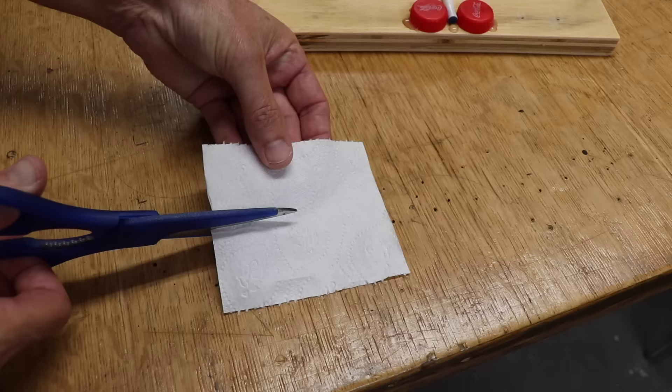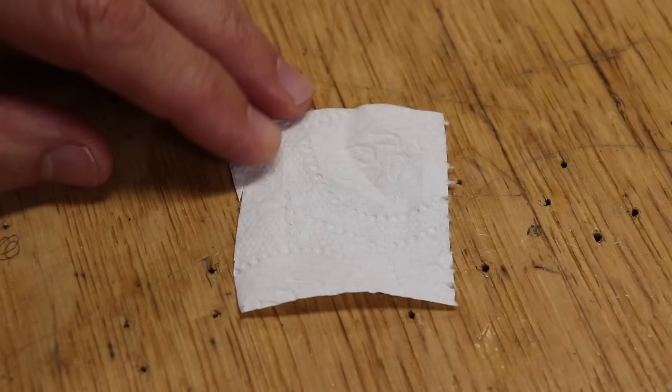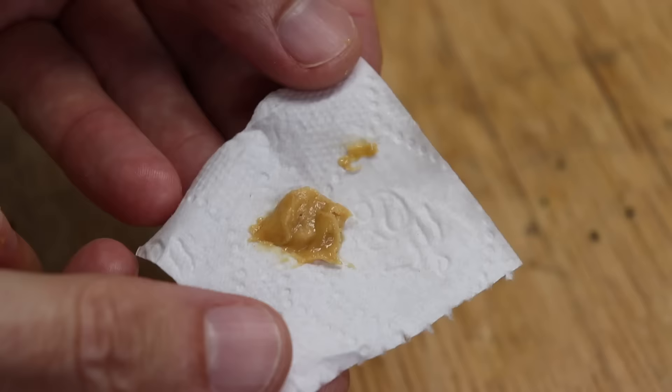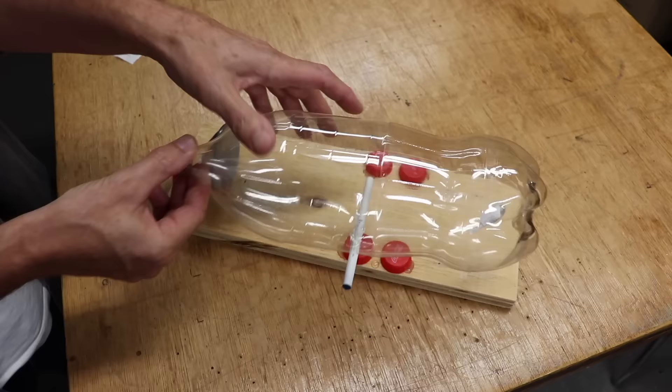To bait it, just get one piece of toilet paper, cut it into four pieces, put a small blob of peanut butter in the center and fold up the edges and pop it into the bottle.